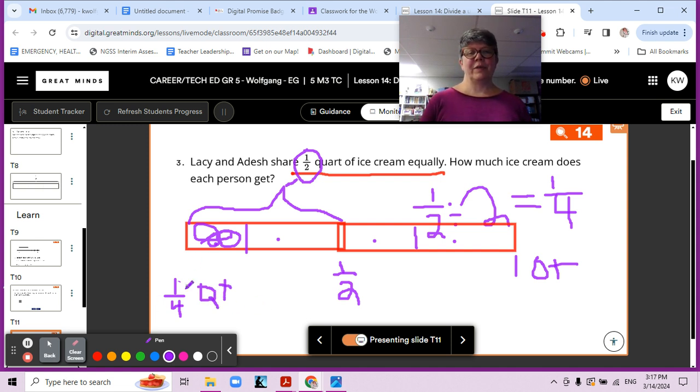Okay. So, please write down that each person gets one fourth quart of ice cream. Very good. Okay. Well, that is it for lesson 14. Thanks for your hard work. And I'll see you in class. Aloha.